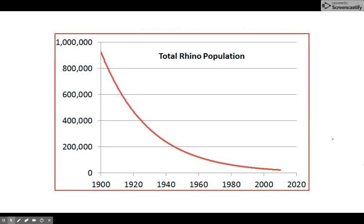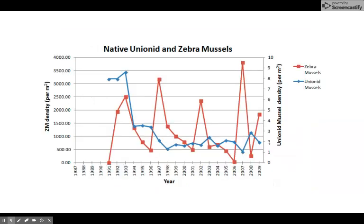This is the rhino population of the world from 1900 to now — one million rhinos down to barely showing on the graph. Is that a stable population with ups and downs, or is it showing collapse?